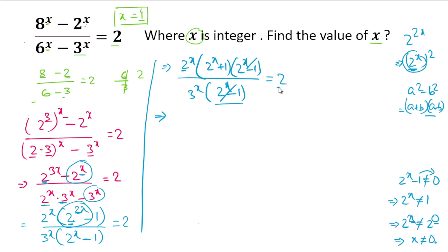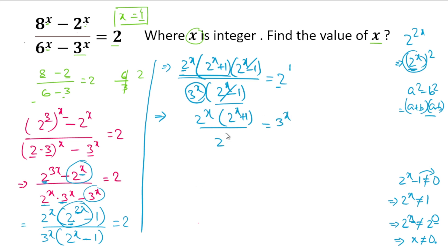After cancellation, we simplify further. The 2 on the right-hand side moves to the denominator on the left, giving us 2^x · (2^x + 1) / 2 = 3^x, which simplifies to 2^(x-1) · (2^x + 1) = 3^x.